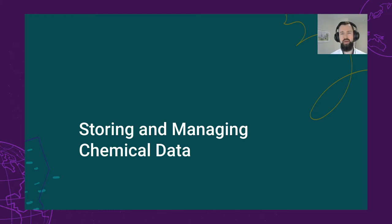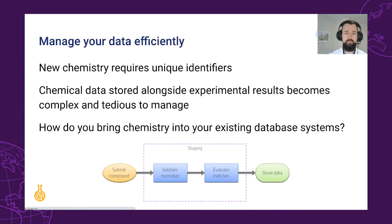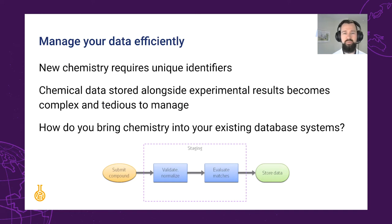We've spoken at some length now about the backend tools that can be used to search your data, but what about the user-facing applications that you use to store, manage, and manipulate it? As your chemists purchase, synthesize, and theorize new chemistry, it must be accurately represented and assigned to unique identifiers. This must be easy to handle at scale. Gone are the days of Excel or manually managed registries. As experimental results from your chemistry arrive, the relationship between those results, repeat runs, data on lots or other salt forms of the same compound, must be intelligently organized, lest it become too burdensome to manage. There is also the question of how to add chemical searching to existing database systems where such a requirement did not previously exist.